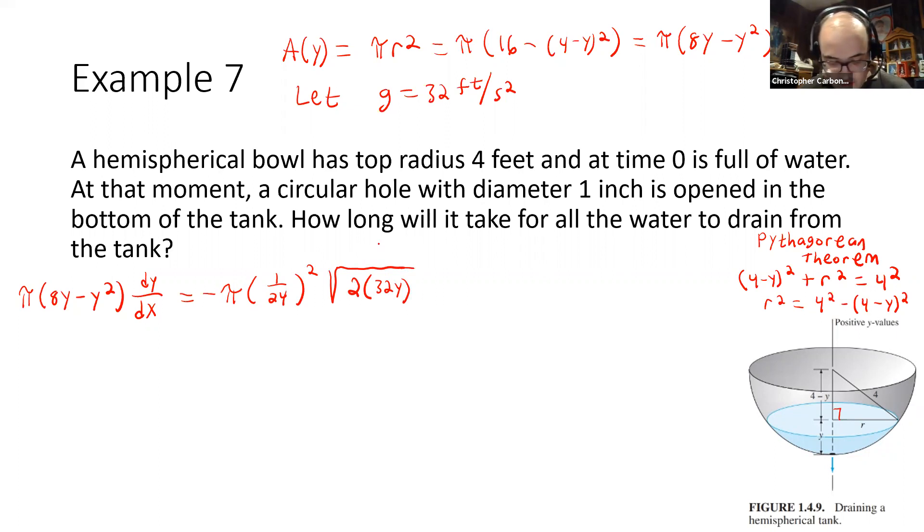this would be negative pi times 1 over 24 squared times the square root of 2 times 32y. And so, we could first go and simplify both sides here by dividing out those pi terms and a little bit of rewriting things and whatnot. But we would obtain the following: 8y to the one-half power minus y to the three-halves power. And this is supposed to be equal to negative 1 over 72 for this.